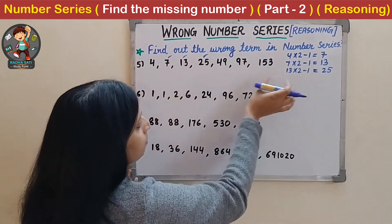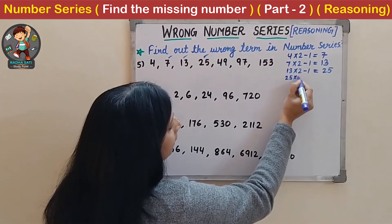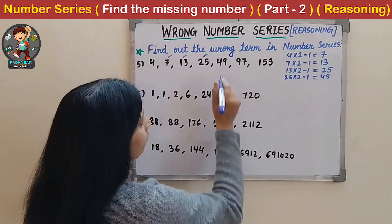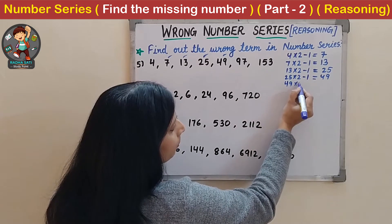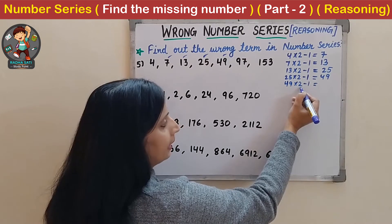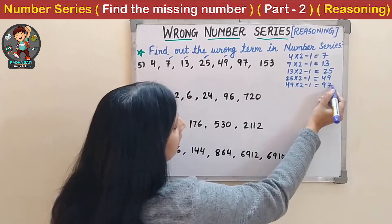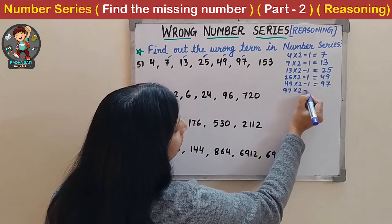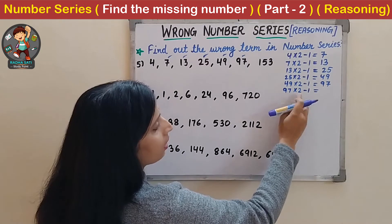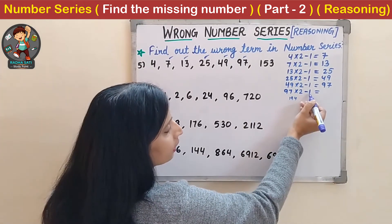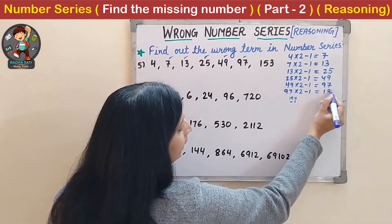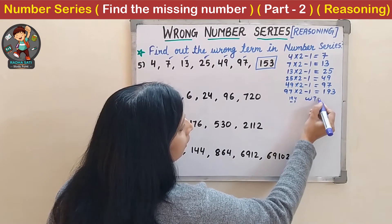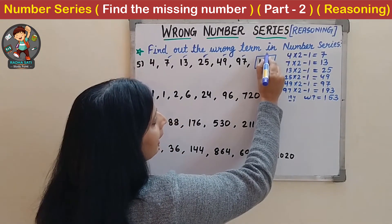Check for the next: 25 multiplied by 2 minus 1 gives 49. Then 49 multiplied by 2 minus 1 gives 97. That number is also correct. Now 97 multiplied by 2 minus 1 gives 194 minus 1 equals 193. But here the number given is 153. So the wrong term is 153 and instead of 153 it should be 193.